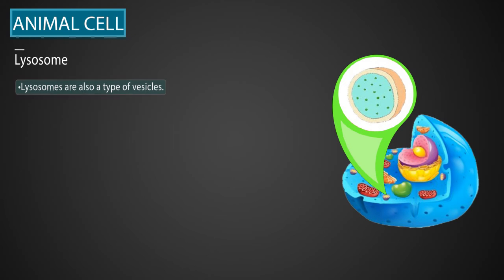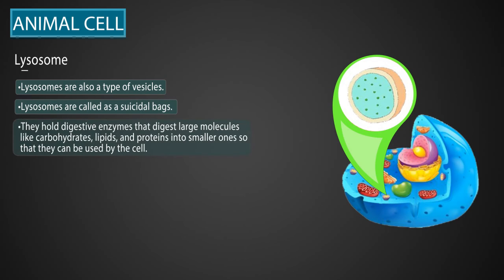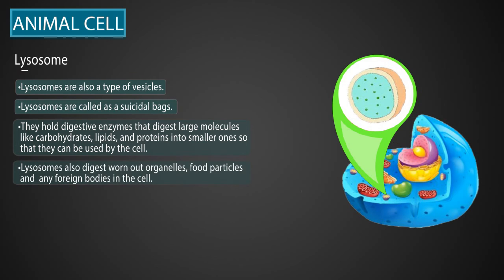Lysosomes are also called suicidal bags, as they hold digestive enzymes that digest large molecules like carbohydrates, lipids, and proteins into smaller ones so that they can be used by the cell. Lysosomes also digest worn-out organelles, food particles, and any foreign bodies in the cell.